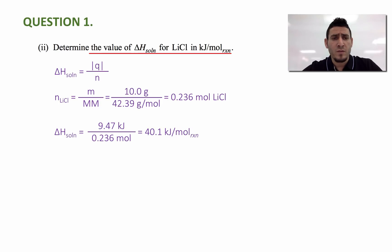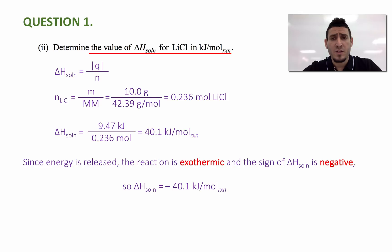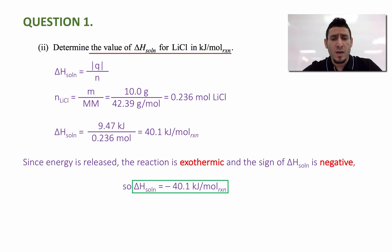Remember that we used the absolute value of the heat. Since the temperature is increasing, we know that energy is released, and since energy is released, the reaction is exothermic. For exothermic reactions, the delta H sign is negative. So the final answer is delta H solution equals minus 40.1 kilojoules per mole reaction.